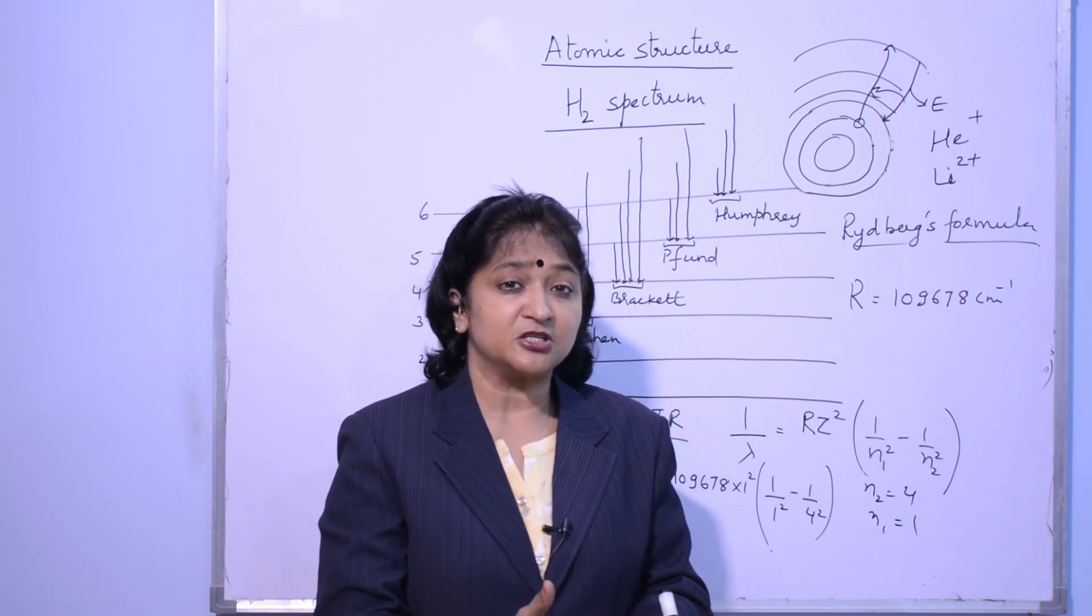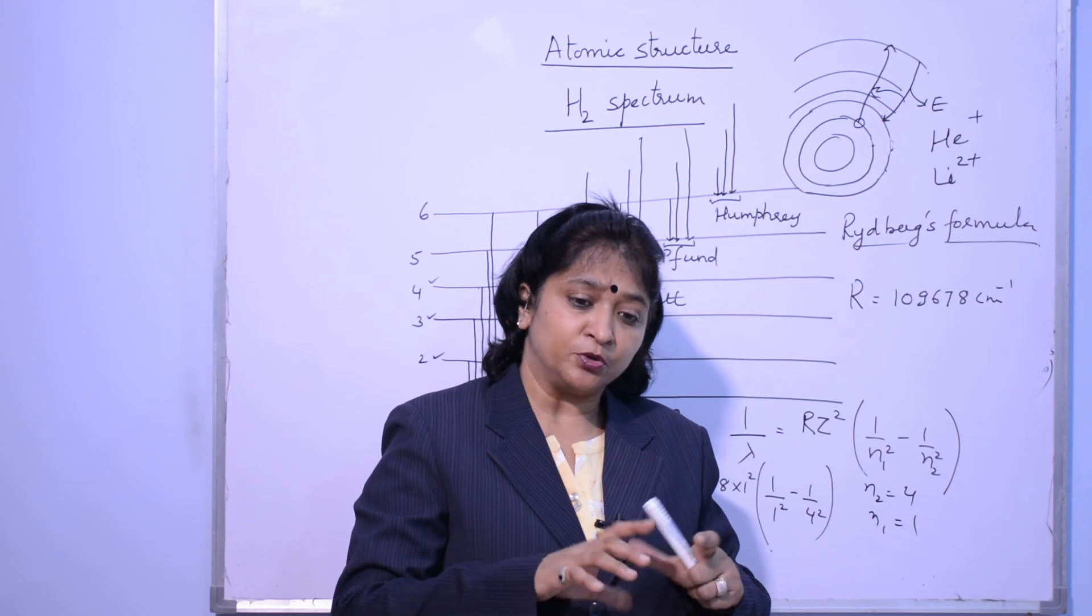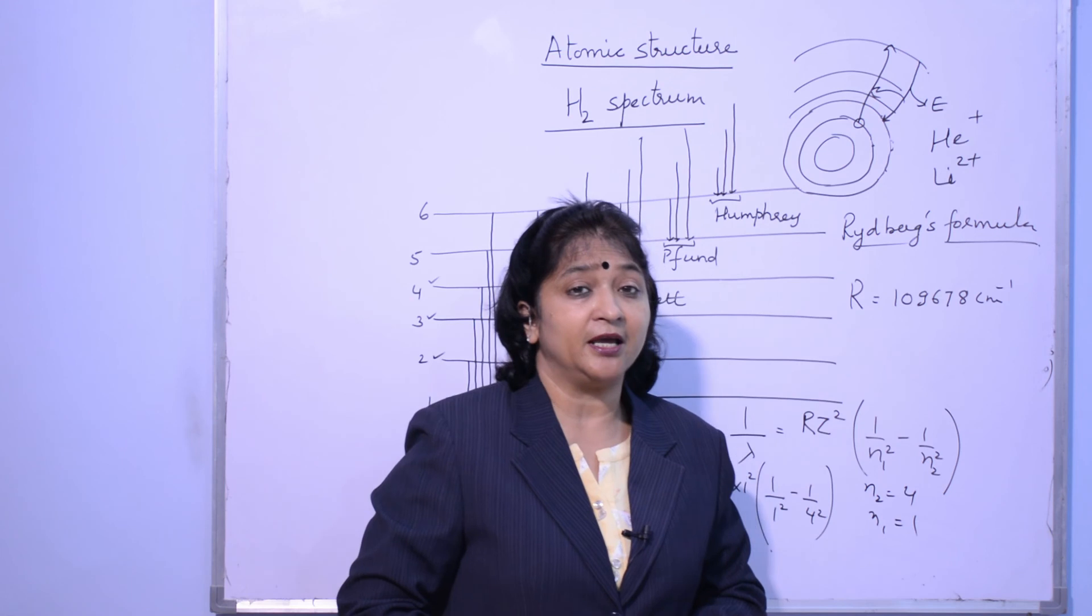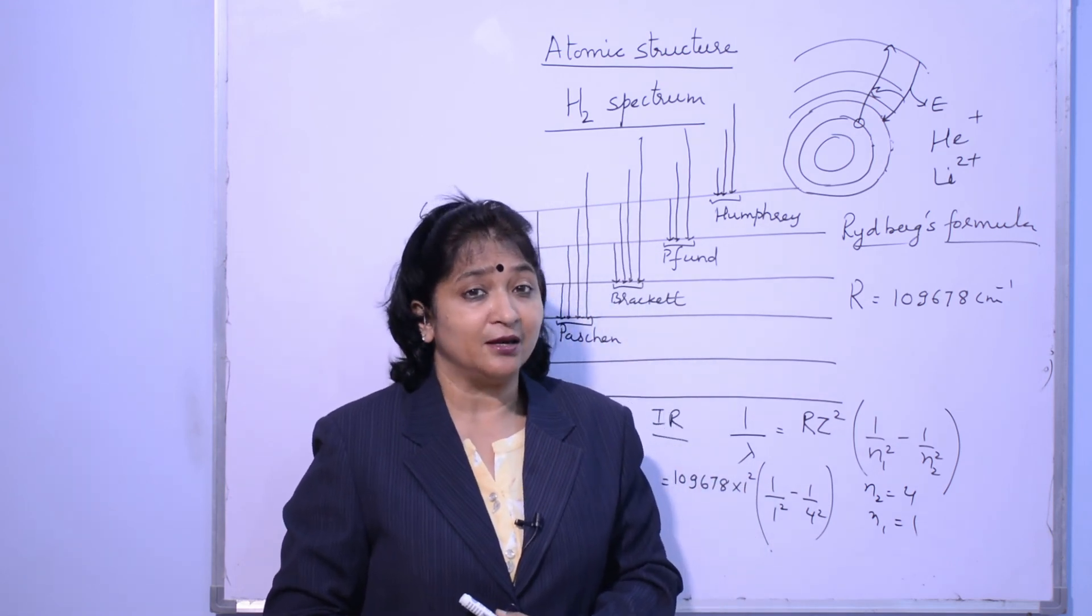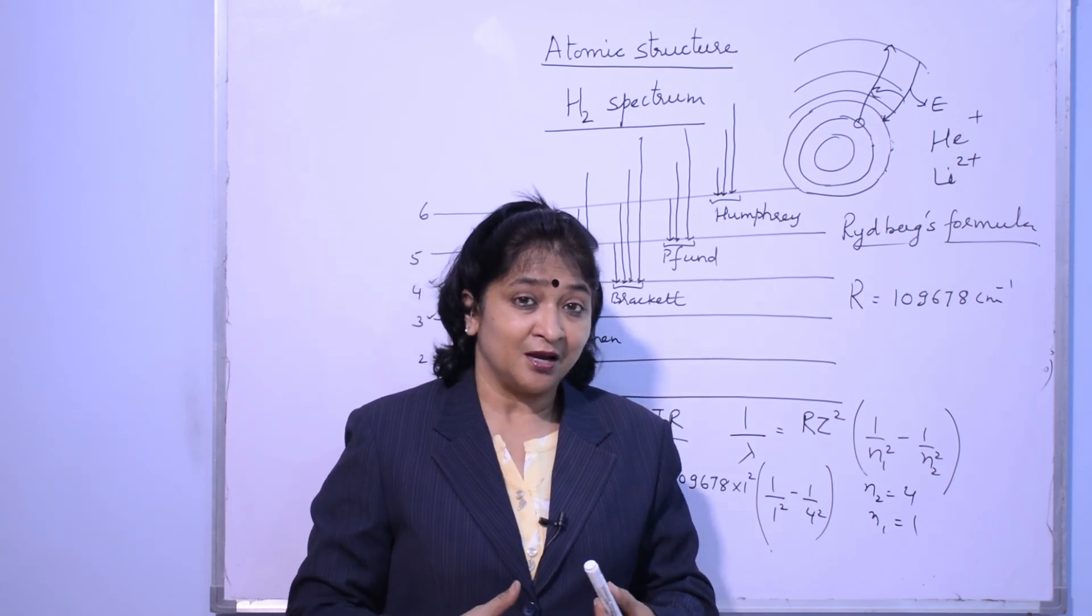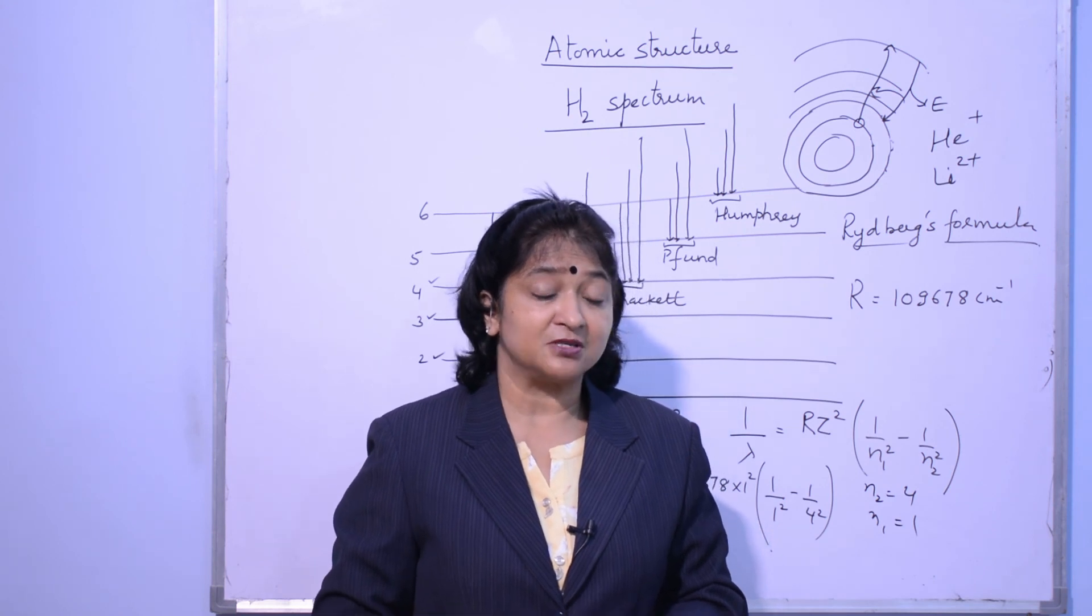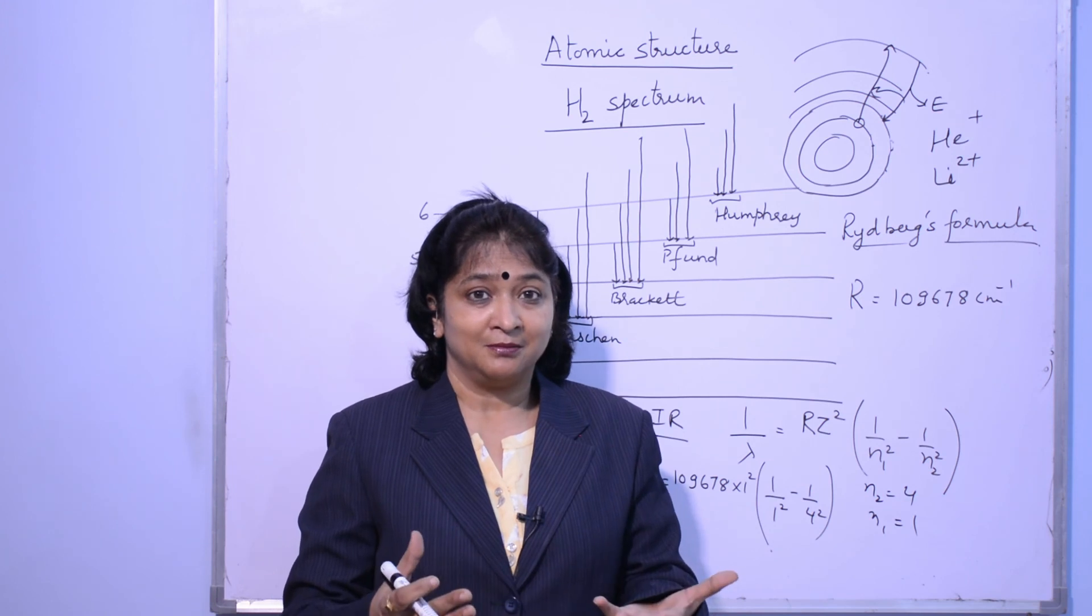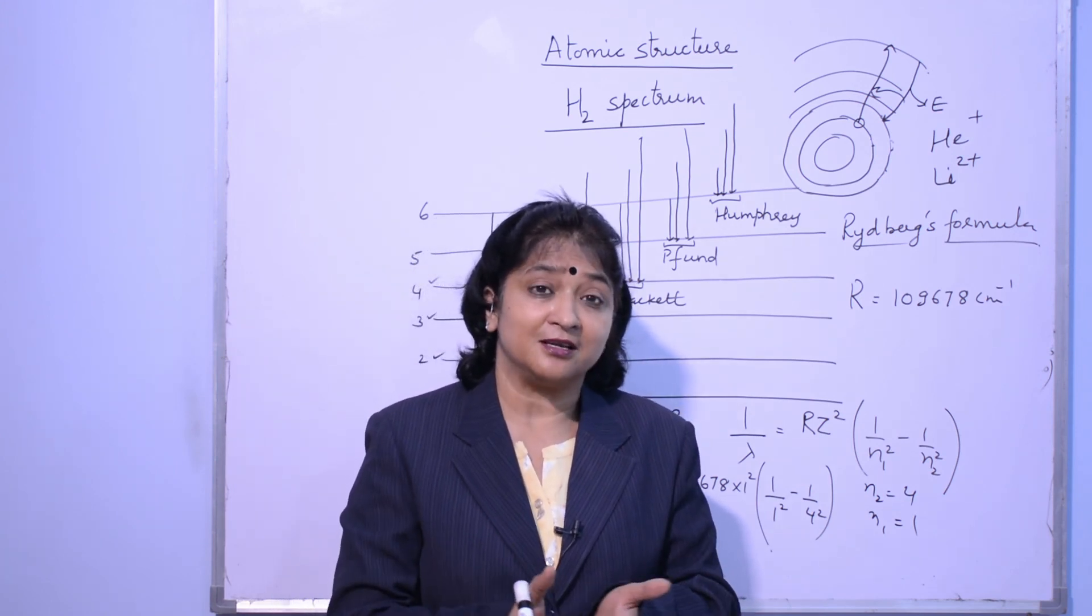So there is Lyman series, there is Balmer series, there is Paschen series, Brackett, Pfund, Humphrey series. So while looking at the question, see which series is being talked about, you have to put the value of N1 there. Which transition line is it, based on that you have to put the value of N2. So hydrogen spectrum is - I feel that you must have liked this topic, hydrogen spectrum, which is a very interesting phenomenon. Just thinking about it feels so good that there is such a spectrum where you are getting so many series together.